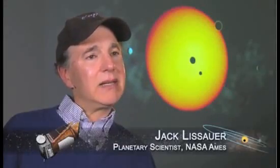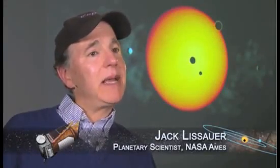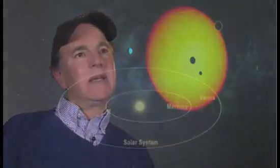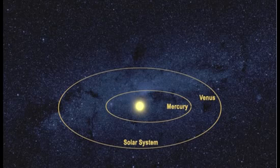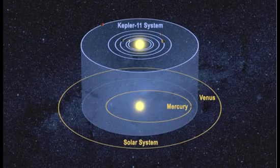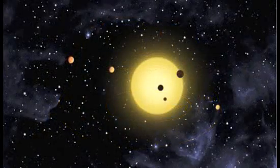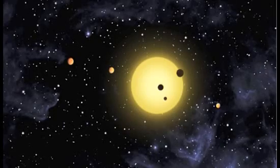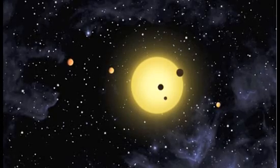The Kepler 11 planetary system is amazing. It's amazingly compact, it's amazingly flat. There's an amazingly large number of big planets orbiting close to their star. We didn't know such systems could even exist. There are certainly far fewer than one percent of stars have systems like Kepler 11.